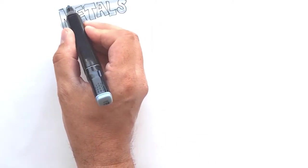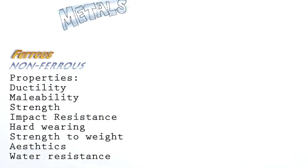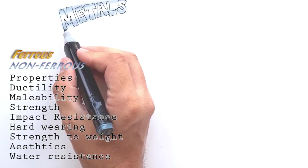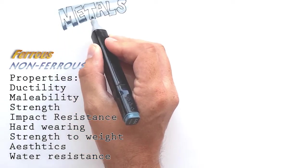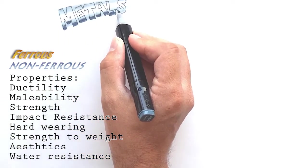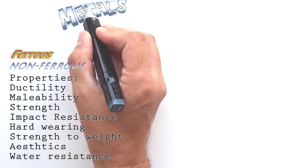So for example one metal might be particularly water resistant whereas another metal might be particularly impact resistant. A designer will make decisions based on the metal's property.